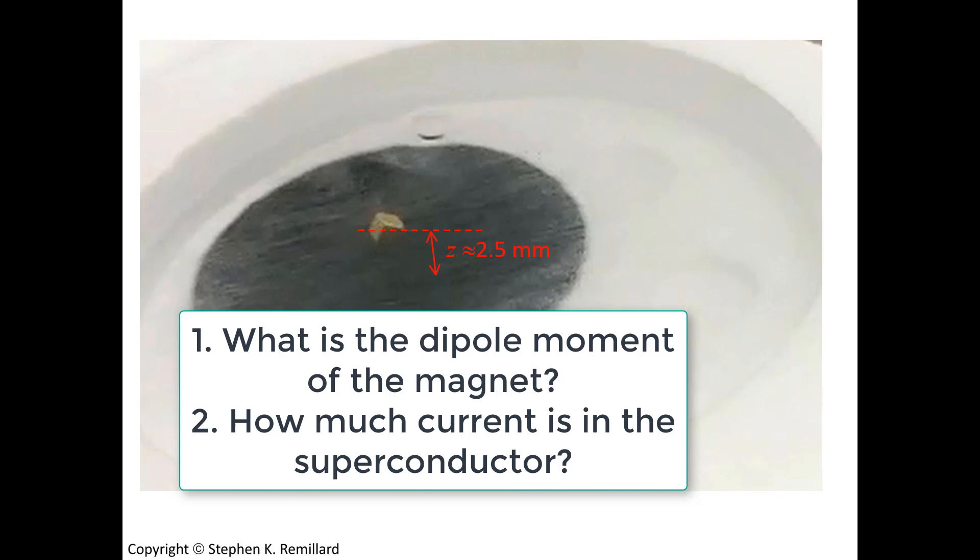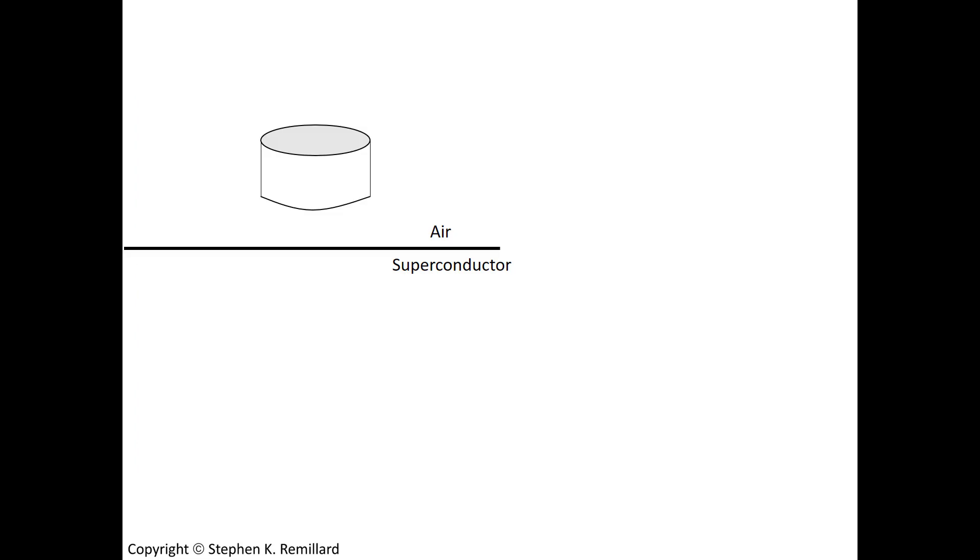In order to answer these questions, let's make a cartoon drawing of what we just observed. The magnet is levitating above the superconductor, and there's the air interface with the superconductor shown with the horizontal dark line. So beneath that dark line, it's all superconductor.